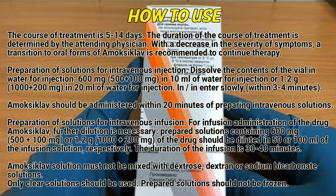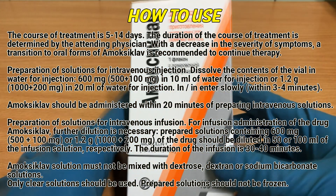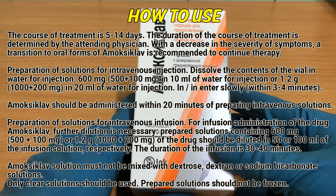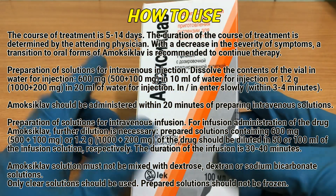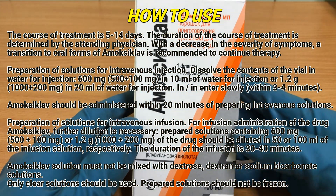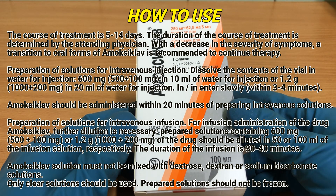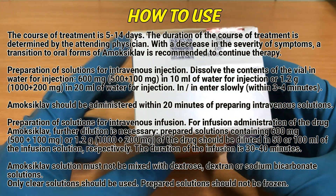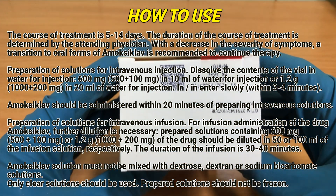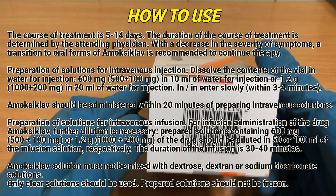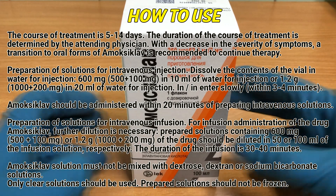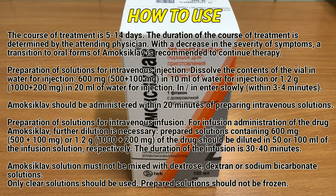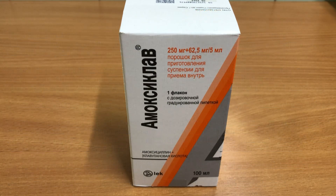Preparation of solutions for intravenous infusion: for infusion administration of Amoxiclav, further dilution is necessary. Prepared solutions containing 600 mg (500 plus 100 mg) or 1.2 g (1000 plus 200 mg) of the drug should be diluted in 50 or 100 ml of infusion solution respectively. The duration of the infusion is 30 to 40 minutes. Amoxiclav solution must not be mixed with dextrose, dextrin, or sodium bicarbonate solutions. Only clear solutions should be used. Prepared solutions should not be frozen.